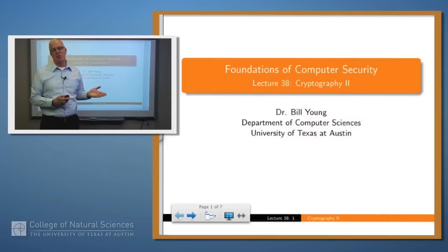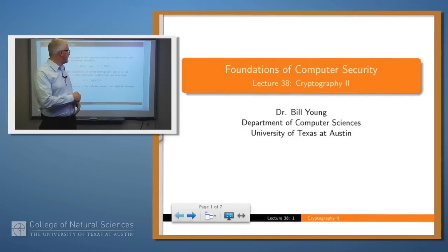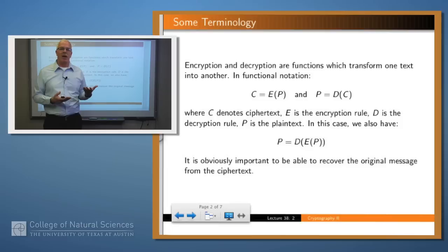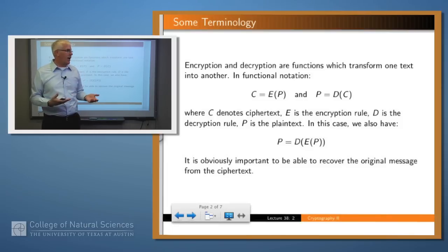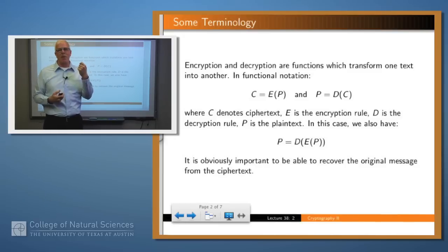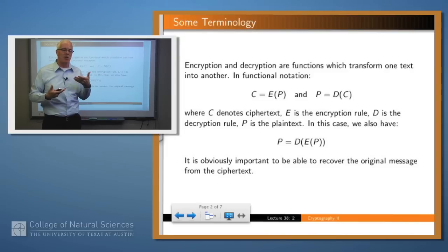Hello again. Last time we introduced the notion of cryptography, and we'll talk a little bit more about that today along with some notation. Encryption and decryption are just functions applied to texts which give other texts, so we could use functional notation to talk about them. We introduced the vocabulary: ciphertext and plaintext — plaintext being the original message and ciphertext the encrypted message.